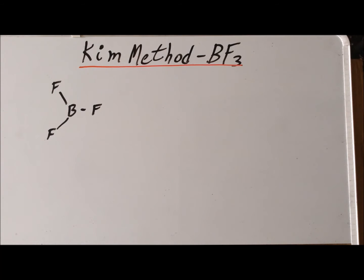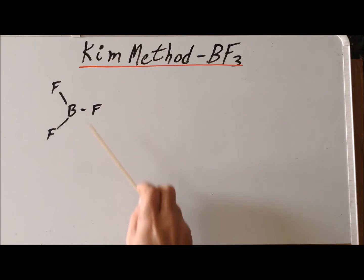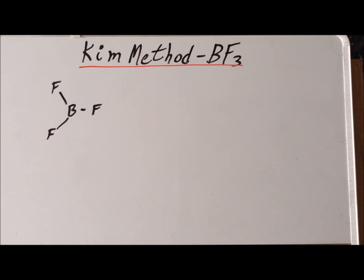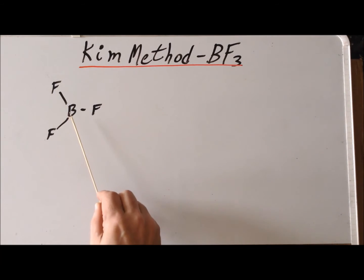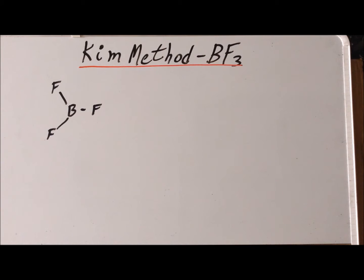Hello. In this video, we are going to derive all of the molecular vibrations of boron trifluoride using the Kim method. Recall that boron trifluoride is a trigonal planar molecule where the fluorine-boron-fluorine bond angles are 120 degrees, which reminds us that boron is sp2 hybridized in this particular compound.